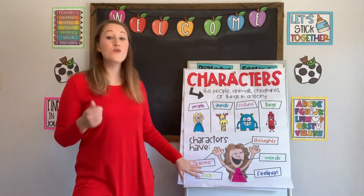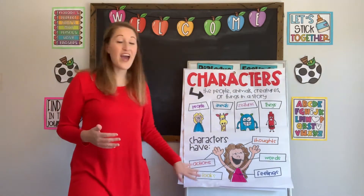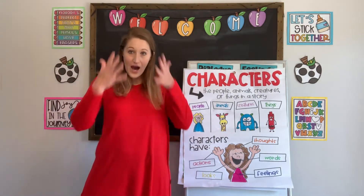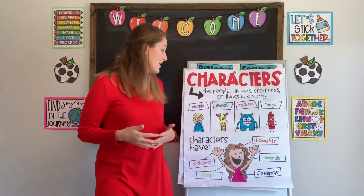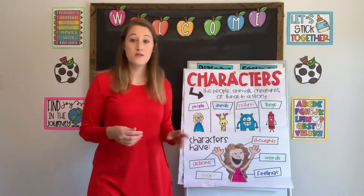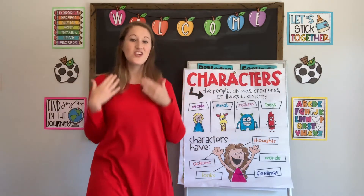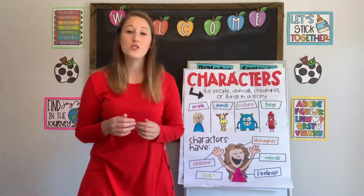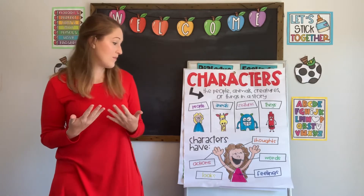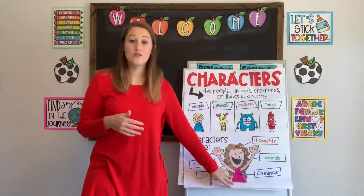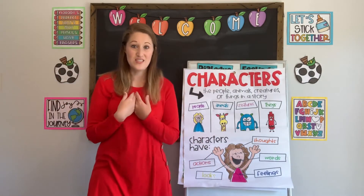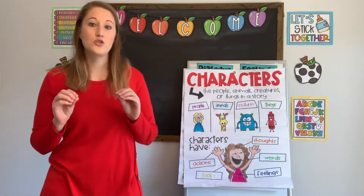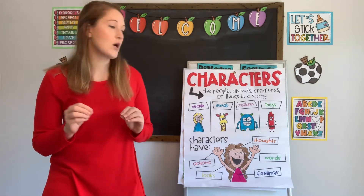Characters have a few things we know about them. They have actions — things that they do. They have looks — how do they look, what do they dress like? They have thoughts, just like we do. They have their words, which we sometimes call dialogue — what do they say? And they also have feelings, the things that they feel inside. These pieces of a character are called character traits — things that we know about them.